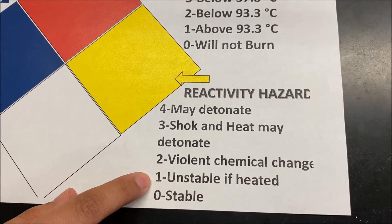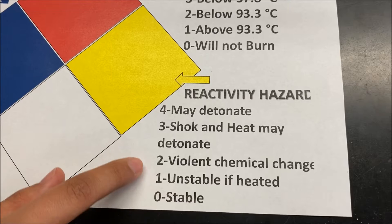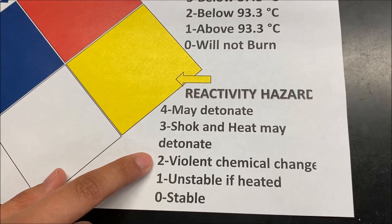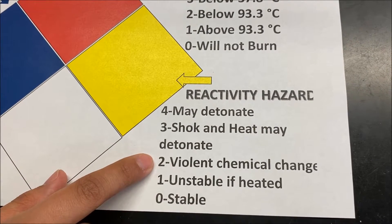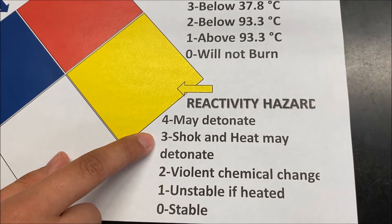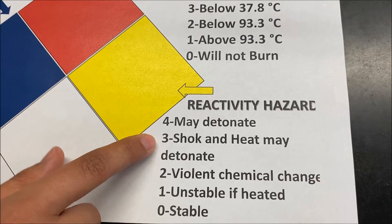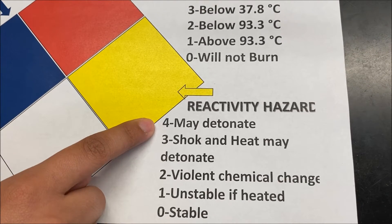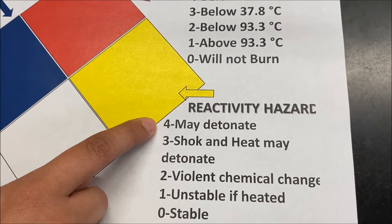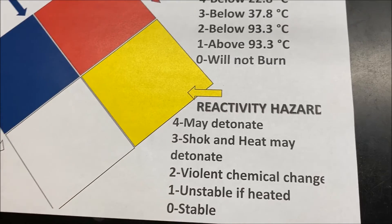For reactivity: 0 means the chemical is stable. 1 means it is unstable if heated. 2 means it undergoes a violent chemical change. 3 means shocks and heat may detonate the chemical. And 4 means it may detonate on its own.